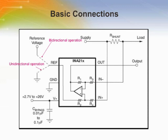The figure shows the basic connections of the INA210 to INA214. The input pins IN+ and IN- should be connected as closely as possible to the shunt resistor to minimize any resistance in series with the shunt resistance. Power supply bypass capacitors are required for stability. Applications with noisy or high impedance power supplies may require additional decoupling capacitors to reject power supply noise.